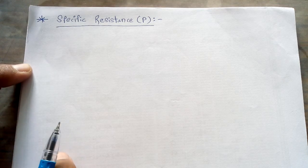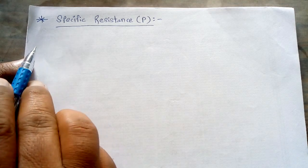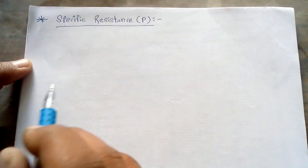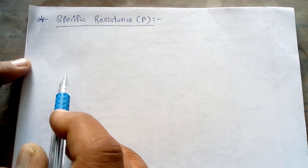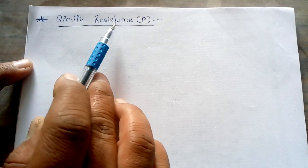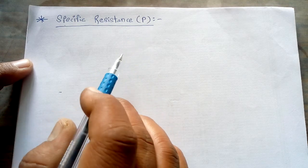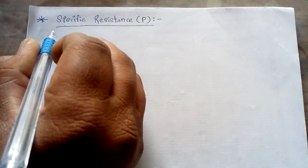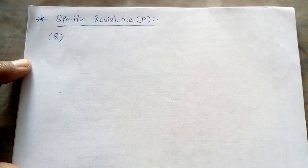Now in the current lecture we are going to study some important concepts from this chapter which we use frequently. The first important concept is called the specific resistance of a conductor. Whenever we consider a conductor — it may be a metallic conductor or an electrolytic conductor — we need to understand what is meant by its specific resistance, shown by the symbol rho. First of all, we must know what is meant by the resistance of a conductor, which is denoted by capital R.